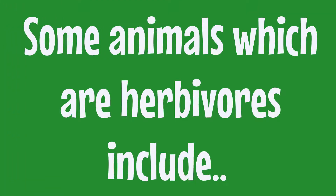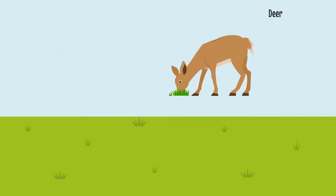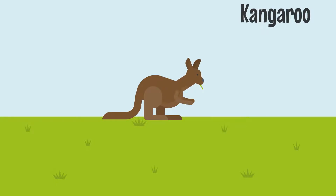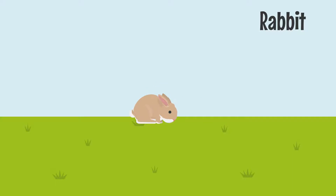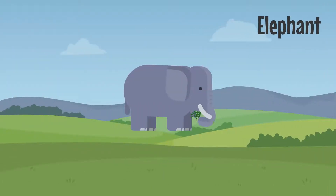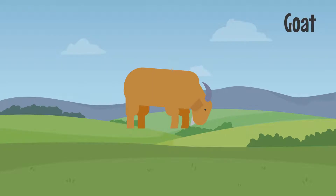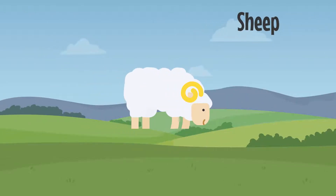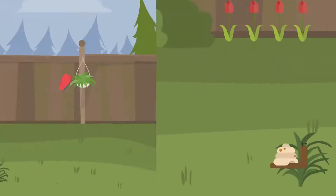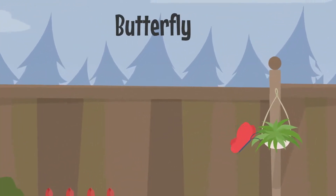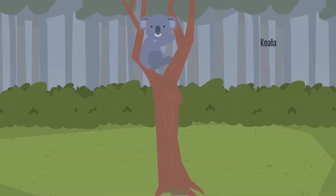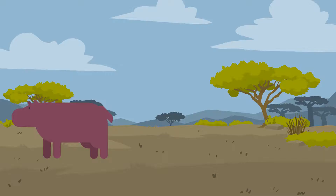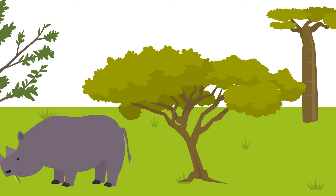Some animals who are herbivores include cows, deer, kangaroos, horses, rabbits, elephants, goats, sheep, snails, butterflies, zebras, giraffes, koala bears, hippos, and rhinos.